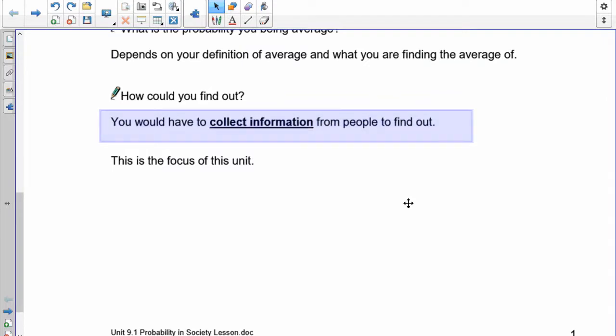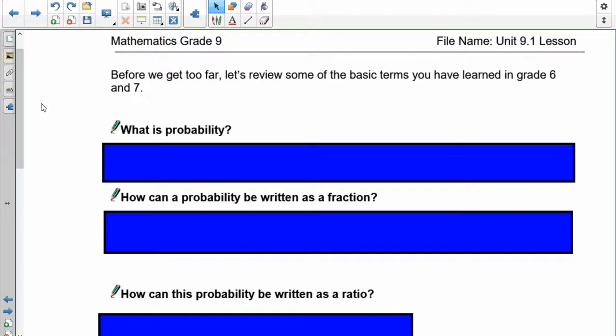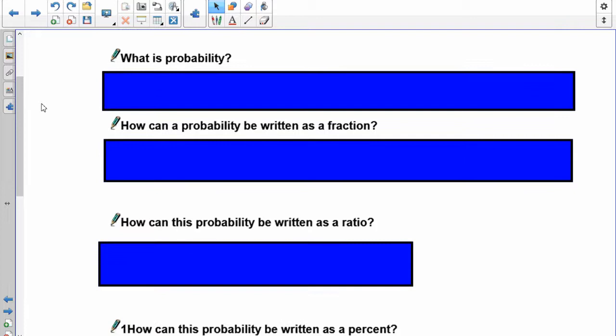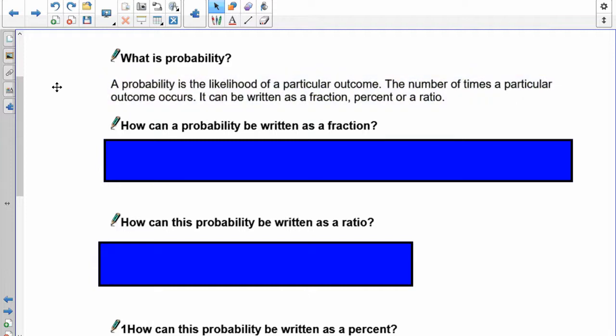Are you talking about your average beliefs in religion? Are you talking about your average in terms of earnings? Are you talking about the average in height? How could you find out all this information? Well, it's very simple. You have to collect information from people to find out this stuff. And that is the focus of this unit, collecting information. So before we go too far, let's review some of the terms that we learned in grades 6 and 7. First off, what is the definition of probability? A probability is the likelihood of a particular outcome. The number of times a particular outcome occurs. It can be written as a fraction, a percent, or as a ratio.